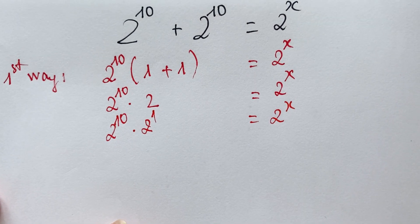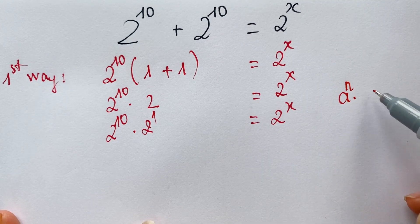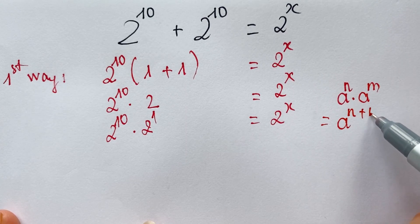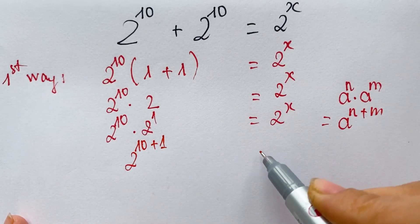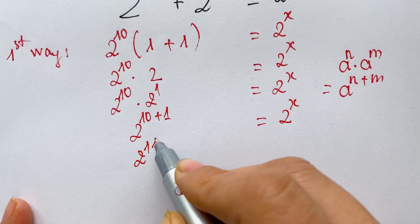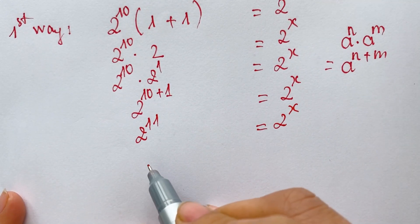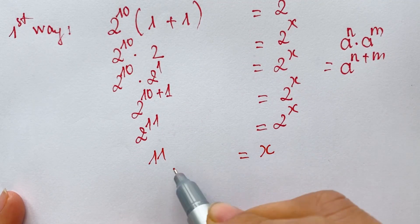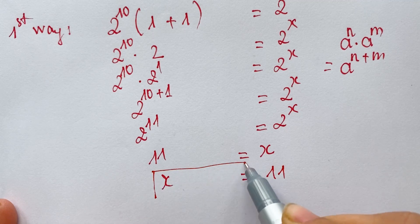Everyone, see the exponential rules: a power n times a power m is equal to a power n plus m. So we have 2 power 10 times 2 power 1, giving us 2 power 10 plus 1, which equals 2 power 11 equals 2 power x. Therefore, x equals 11.